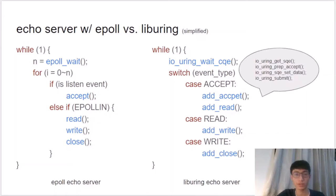We show how different the design of an ECOServer is when written with liburing. The liburing library provides a simplified interface for applications. An application applying io_uring might change its entire design logic. A simple ECOServer constructed with io_uring is implemented as a finite state machine-like program, which is far more different from the traditional design.